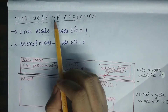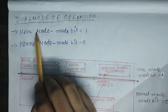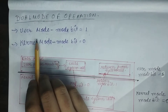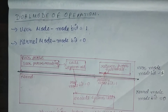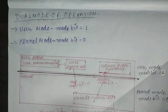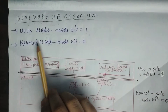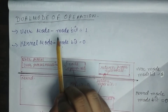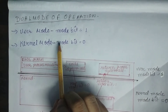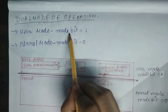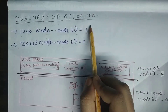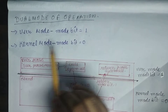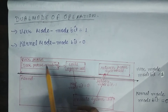Dual mode means there are two modes of operation. The first one is user mode and the second one is kernel mode. User mode means whenever any user program is running, that is user mode, and if the operating system takes control then the system is in kernel mode. To distinguish between each mode, we have a mode bit — if it is one then the current mode is user mode, and if the mode bit is zero that means the current mode is kernel mode.